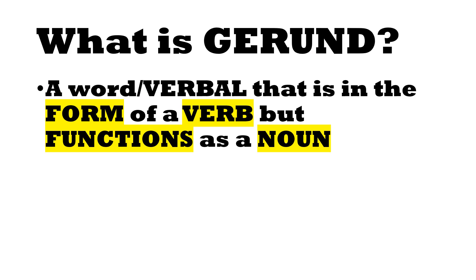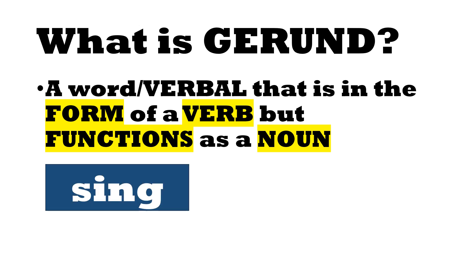So what is a gerund? A gerund is a word that belongs to the verbals — it is in the form of a verb, that's why it's called a verbal. It appears like a verb but functions as a noun.